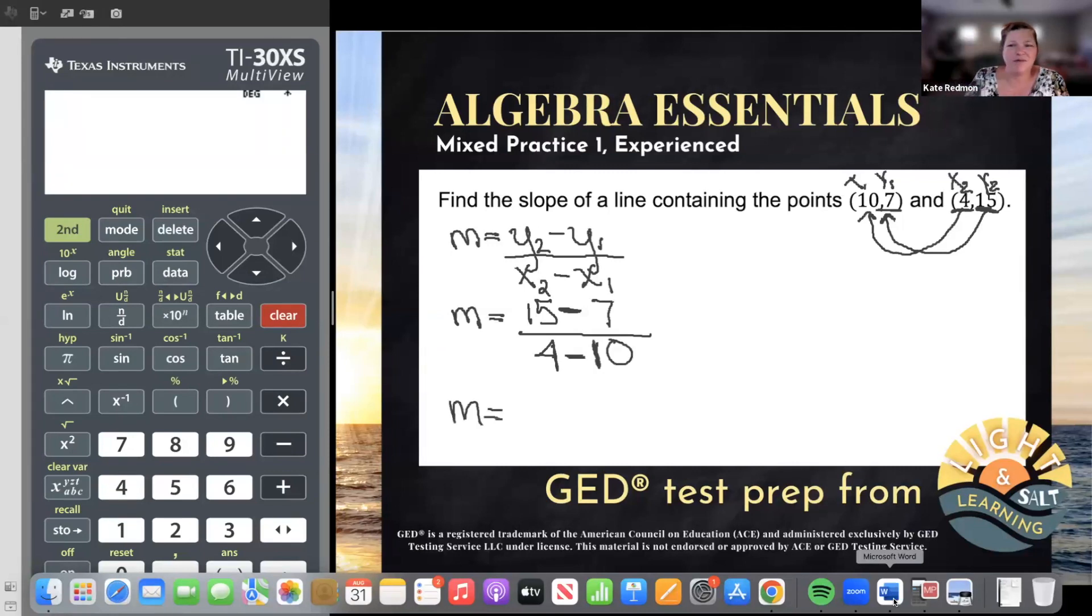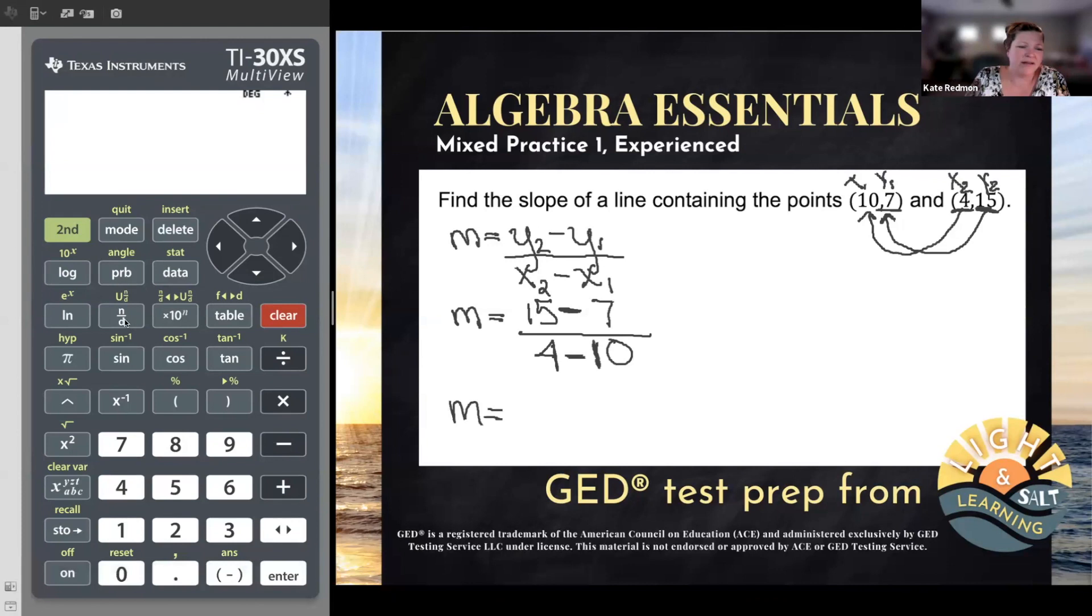And now you can just type this whole thing in your calculator if you'd like. I'll put up the fraction bar with the N over D, type 15 minus seven on the top, arrow down, four minus 10 on the bottom, press enter. And I see my slope is negative four thirds, wasn't hard at all.